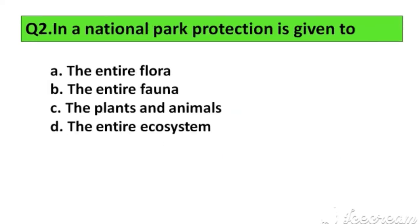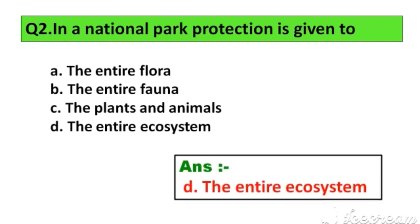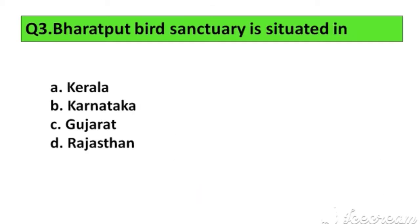Question number 2. In a national park, protection is given to: Option A. The entire flora, B. The entire fauna, C. The entire plants and animals, D. The entire ecosystem. The right answer is Option D. The entire ecosystem.